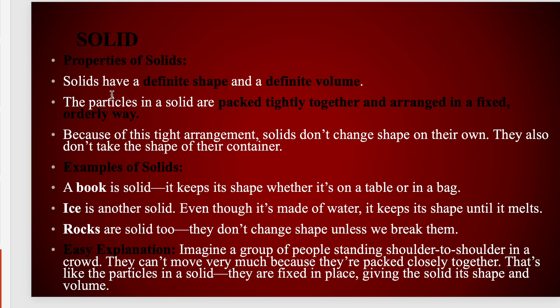The first state is solid. Solid is a state of matter. Solids have a definite shape and a definite volume — these are the properties of this state. The particles in a solid are packed tightly together and arranged in a fixed, orderly way. Due to this tight arrangement, solids do not change their shape on their own and they do not take the shape of their container.